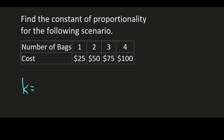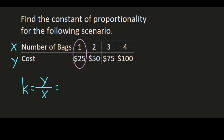We have a formula for that: k equals y over x. In our table, we need to determine which are the y values and which are the x values. Your x values are your independent variables, so the number of bags is going to be x because the cost is determined by the number of bags — that's the dependent variable, y. To solve for the constant of proportionality, choose one data point. Using x equals one makes the calculation easier. So y equals 25 and x equals one: 25 divided by 1 equals 25. Our constant of proportionality is 25.